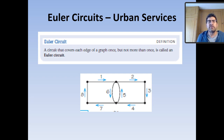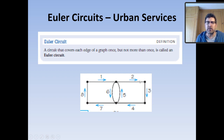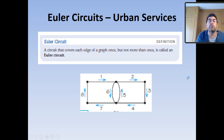It starts and finishes at the same vertex. The graph is a nice representation of that. We start at this vertex, move along that edge — one, then two, then three, four. We go up the street, come down the other side, move along that part of the street, move back on that section, and we're back where we started. We've just completed an Euler circuit.